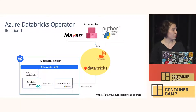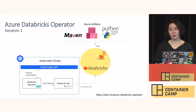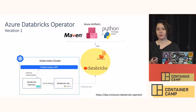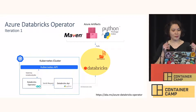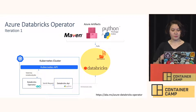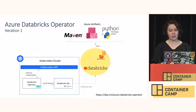We went through a few iterations. In the first iteration, we created a controller where our pod had two containers. Because Databricks had an out-of-the-box Python SDK, we built two applications: one in Python that worked with Databricks — sending notebook job information and getting information back — and one Databricks operator. Because they were in the same pod, they could easily connect to each other, but they were very tightly coupled.